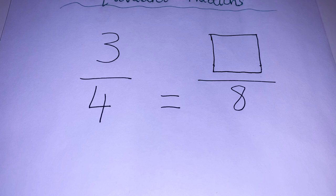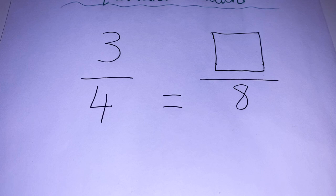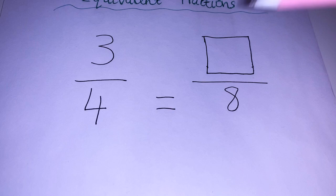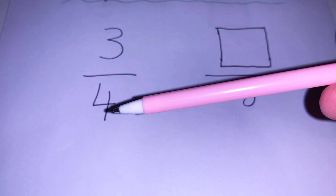We're going to use multiplication, which is quite easy to remember. What we remember from Friday is, when we're multiplying, whatever we do to the top, we do to the bottom, and vice versa. So we need to find out what is the numerator here — we have been given our denominator, which is going to help us.